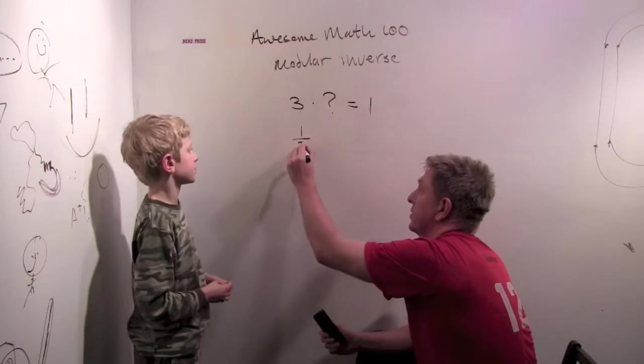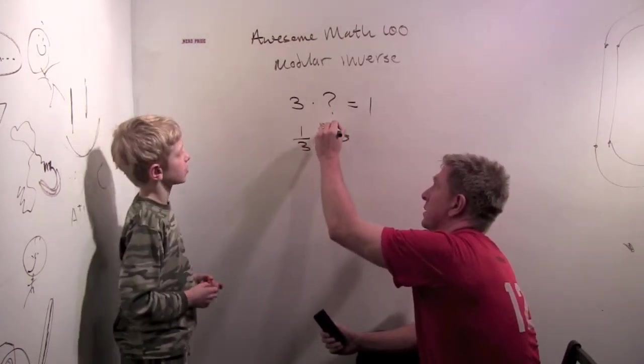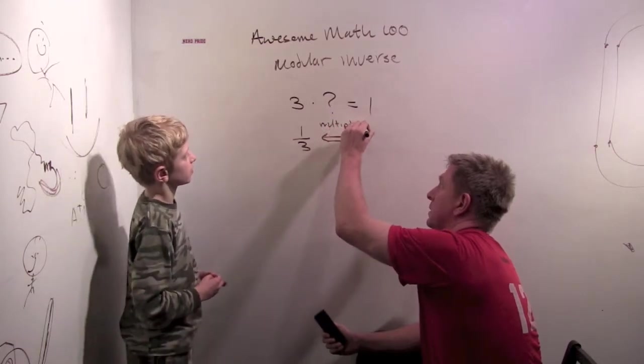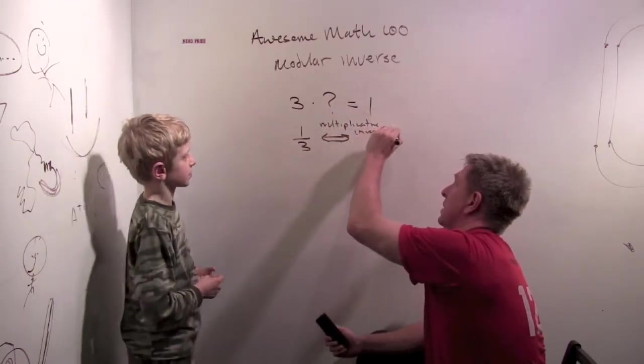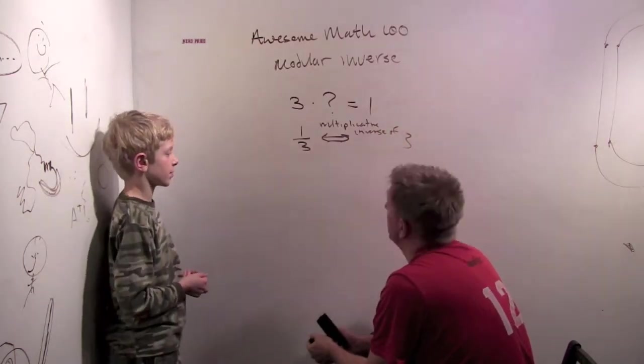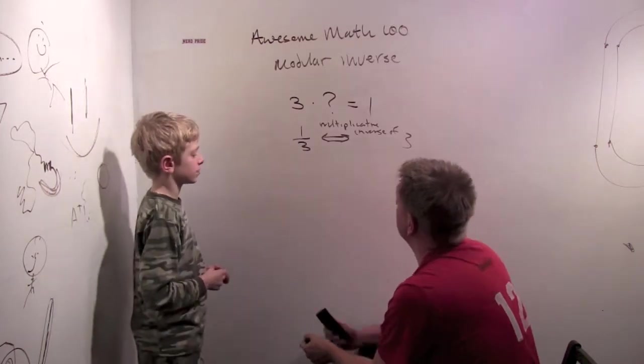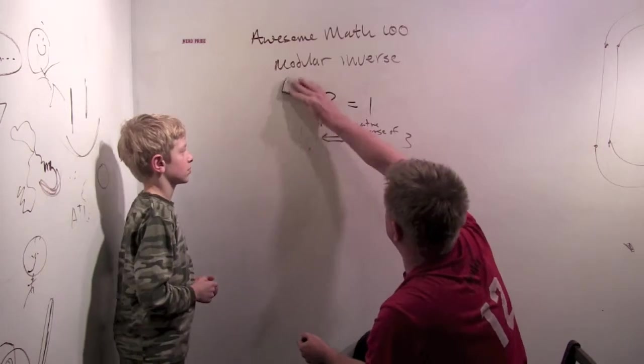Okay. So one-third is the multiplicative inverse of three, and also three is the multiplicative inverse of a third. And we're going to keep that same idea and go to modular arithmetic.